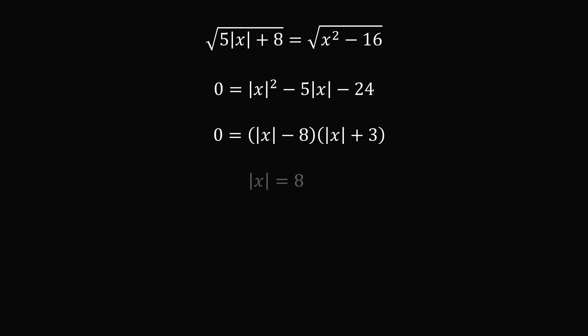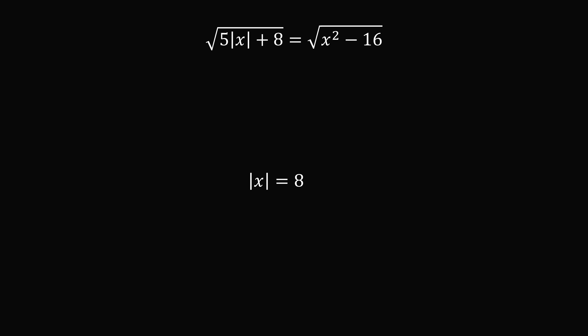This gives two possibilities: either the absolute value of x equals 8, or the absolute value of x equals negative 3. But since the absolute value of x must be greater than or equal to 0, it can't equal negative 3, so we exclude that case. The only possibility is the absolute value of x equals 8. Checking both solutions — x equals negative 8 and x equals 8 — in the original equation, they both work. So x equals negative 8 and x equals 8 are the roots, meaning the product of all the roots is negative 8 times 8, which equals negative 64.